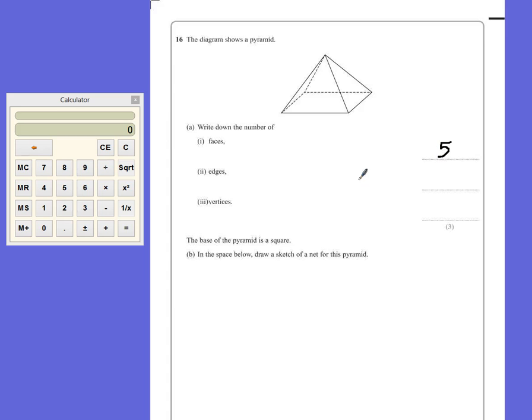Part 2 wants the edges. Now an edge is where two faces meet or align on the diagram. So where the two triangles meet, that's an edge.